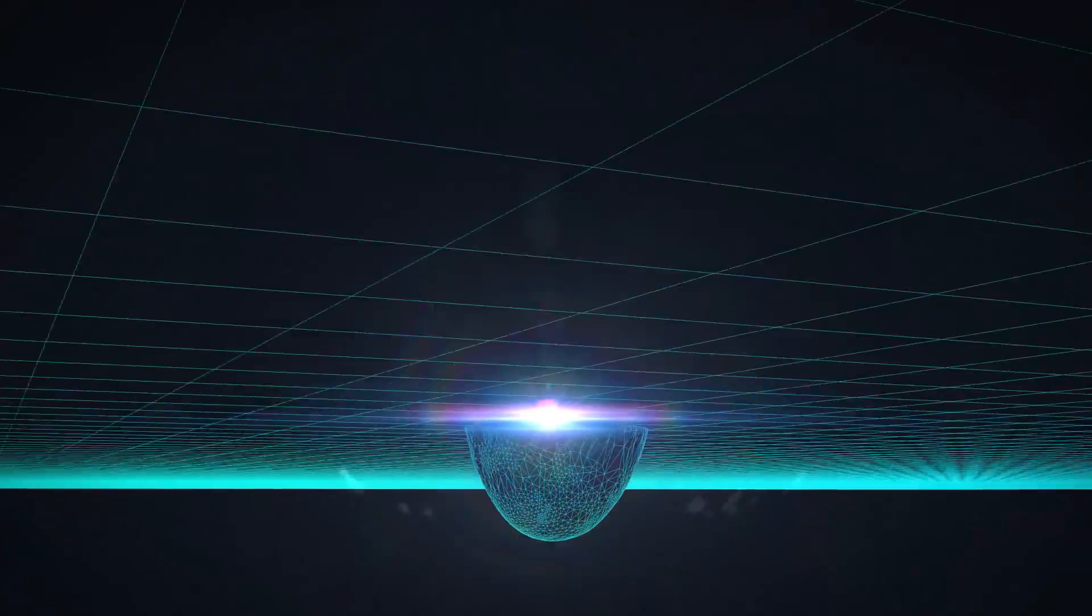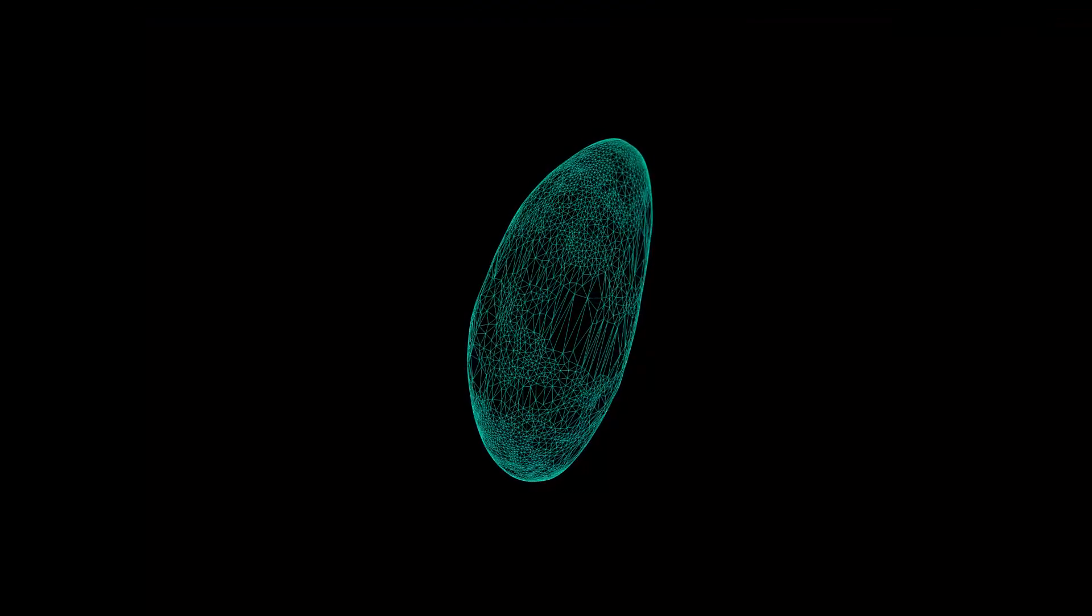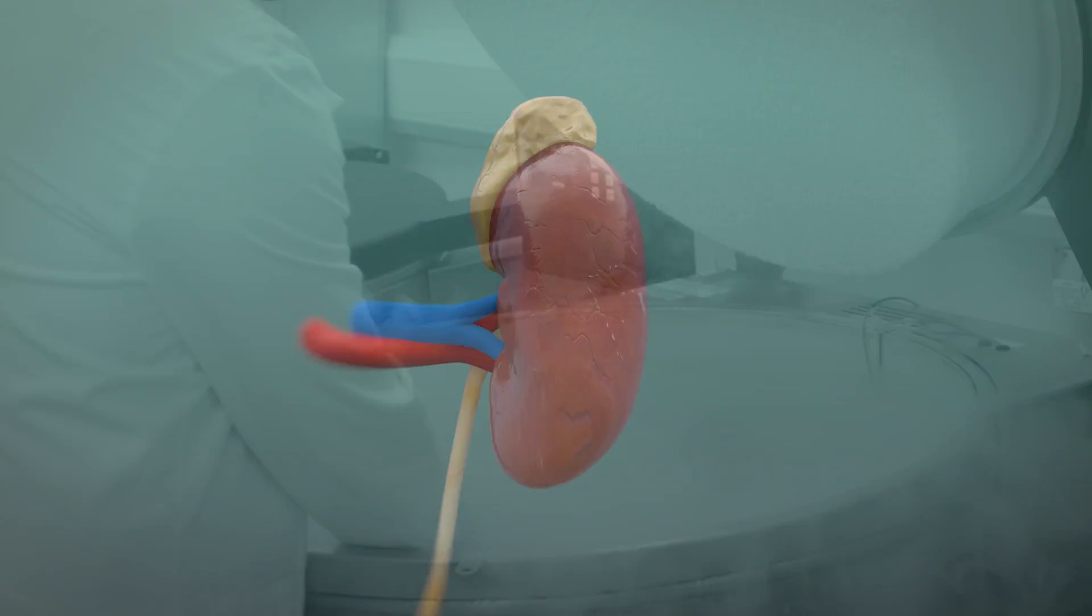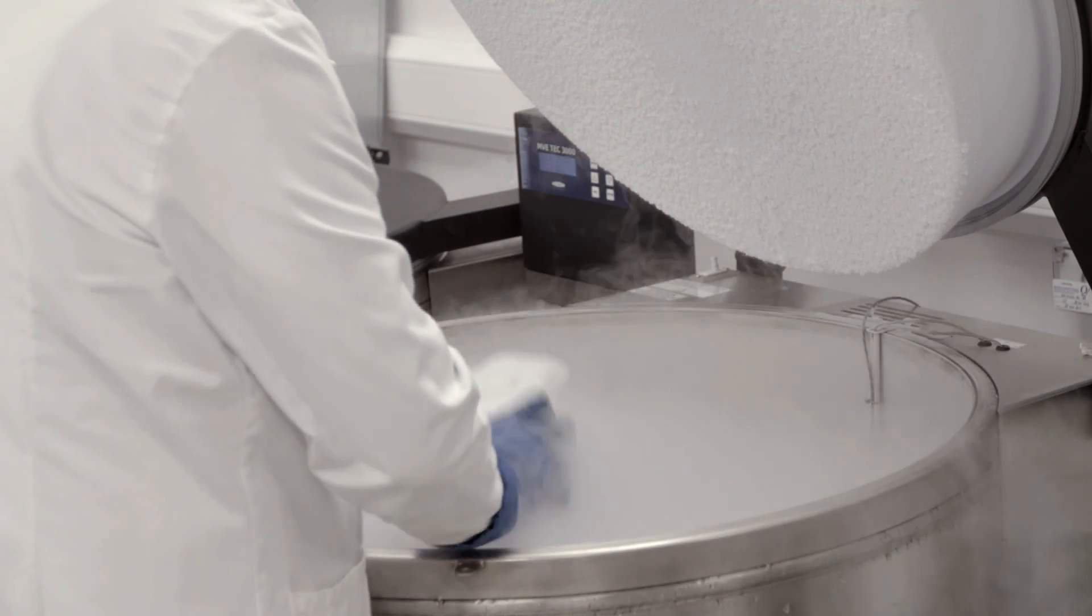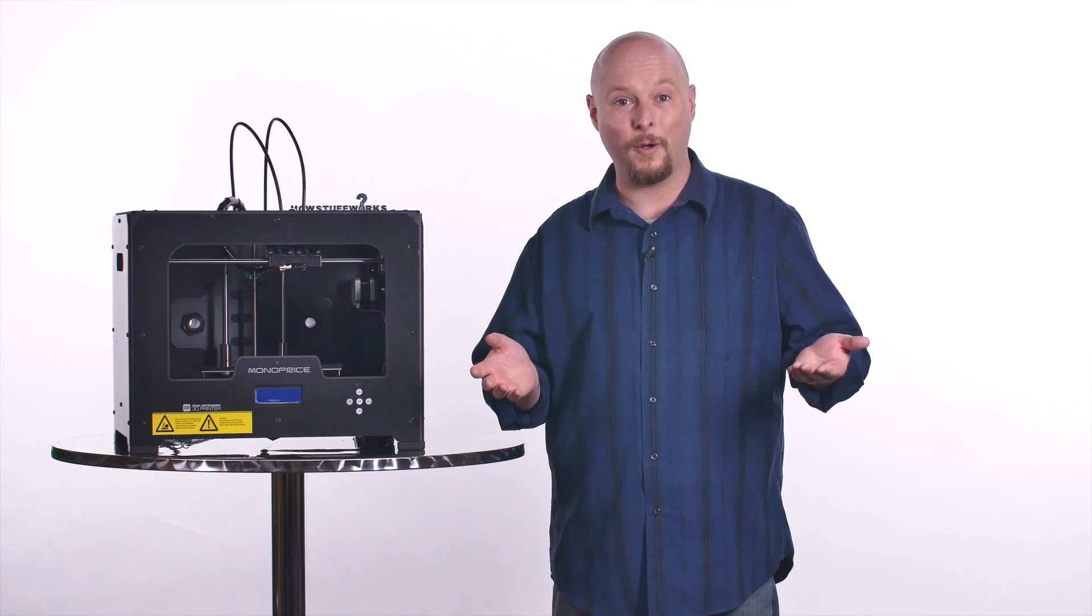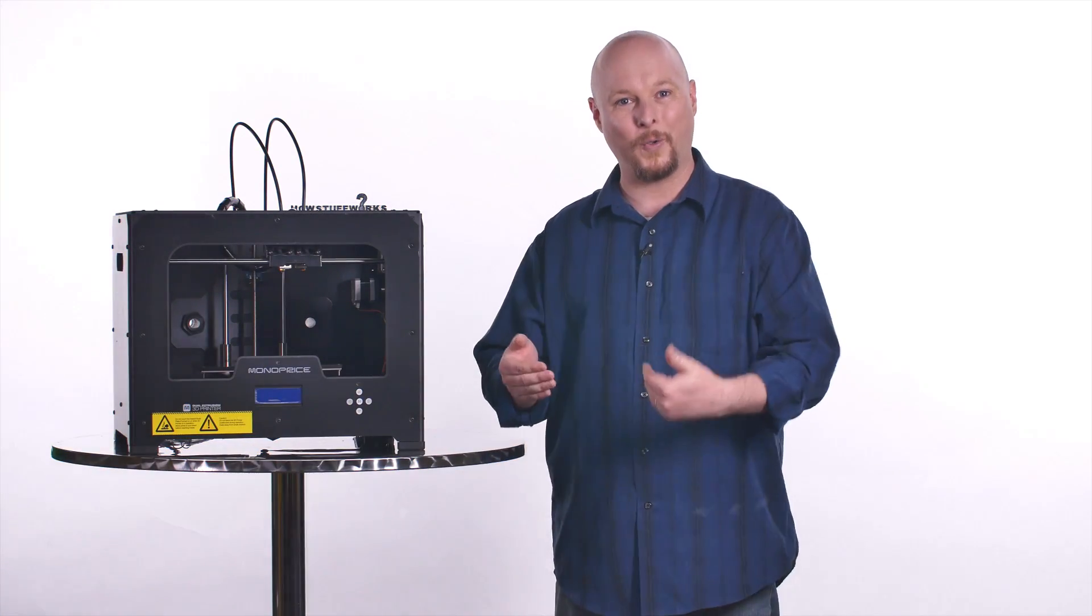Doctors and engineers are looking at using 3D printers to produce human organs. Here's how it would work. They would take stem cells from a transplant patient and then build a living organ using a 3D printer. The patient doesn't have to wait for a suitable donor, and their body is much less likely to reject that organ.